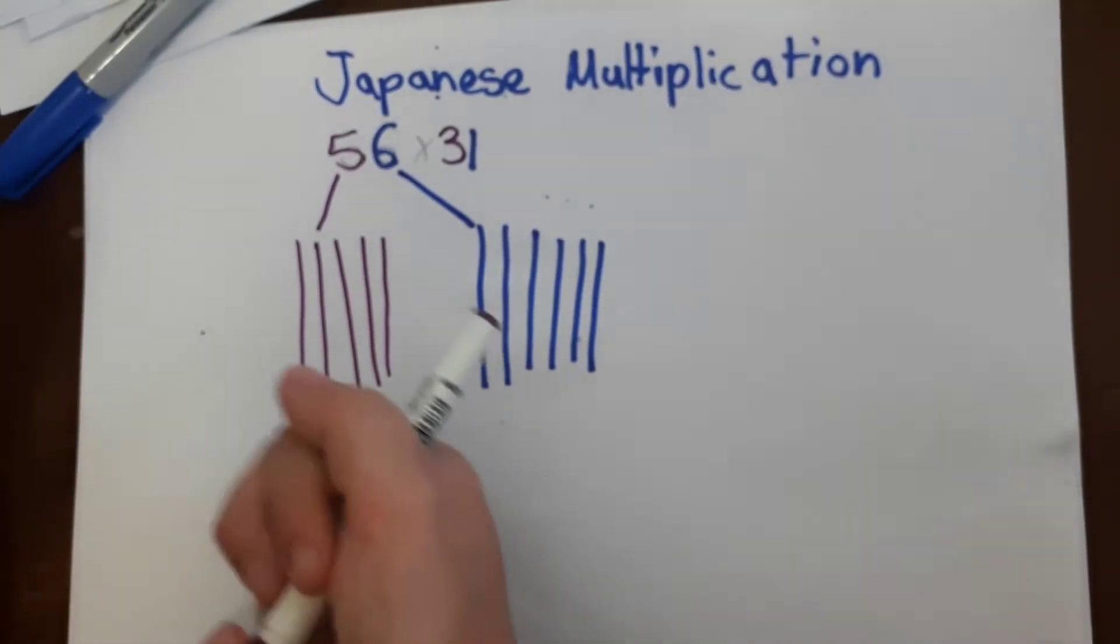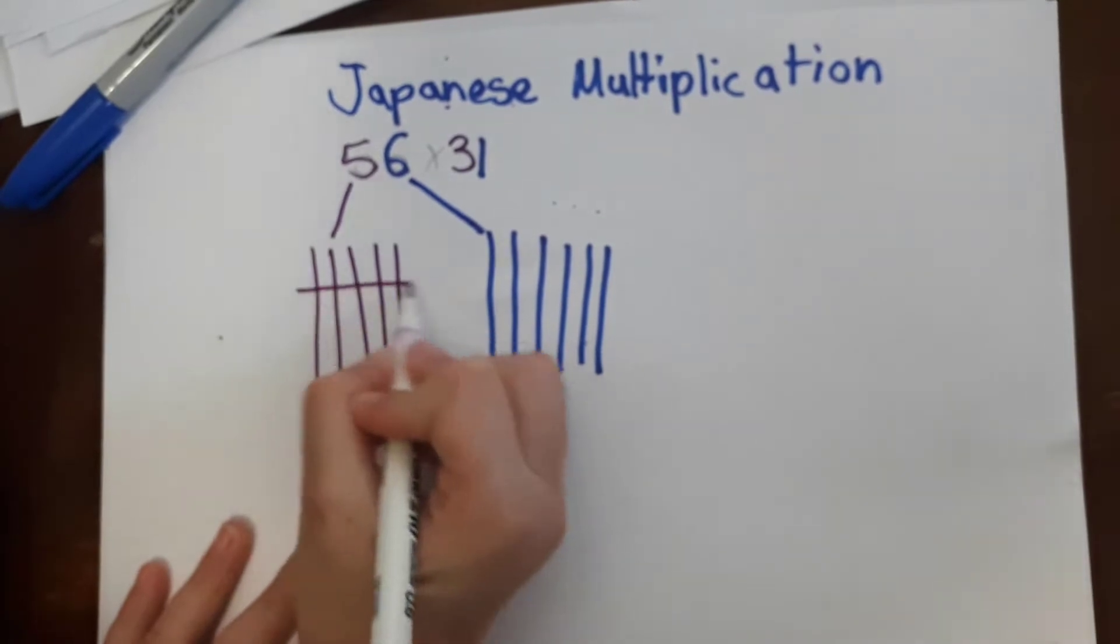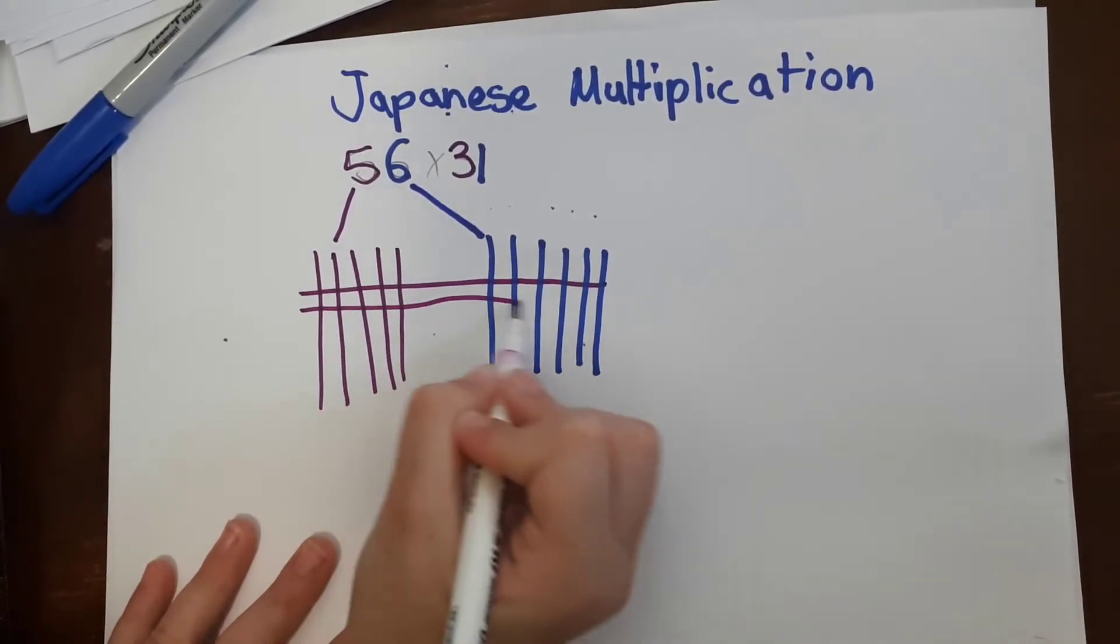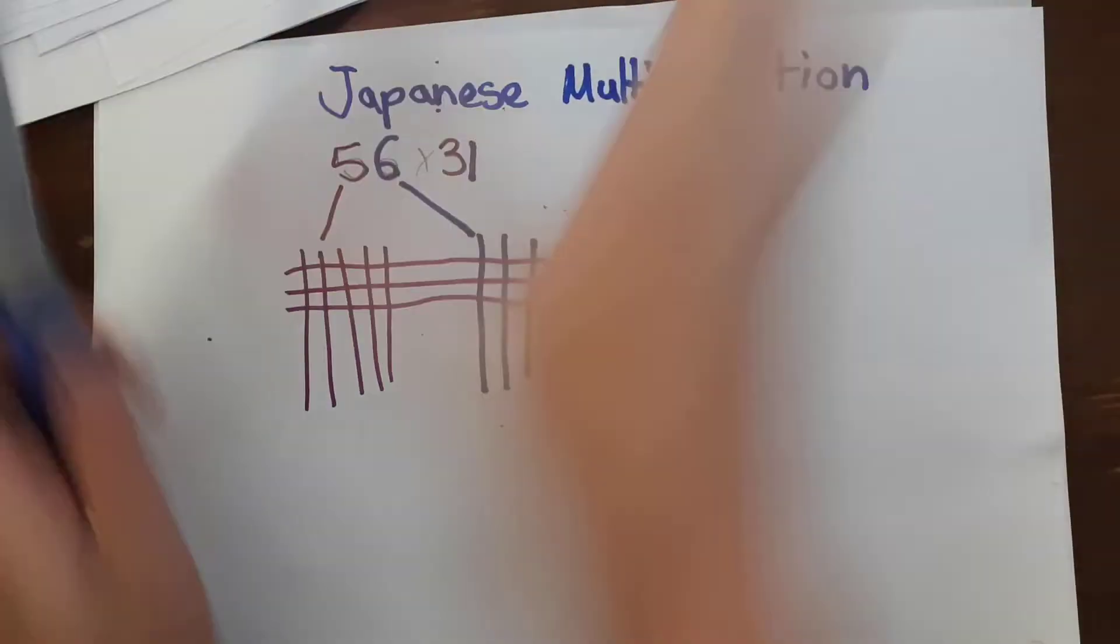Alright and now we're doing this side. So there's three tens and only one one.